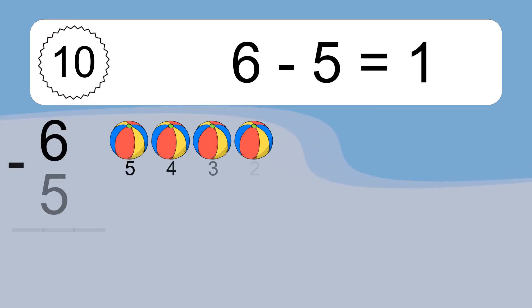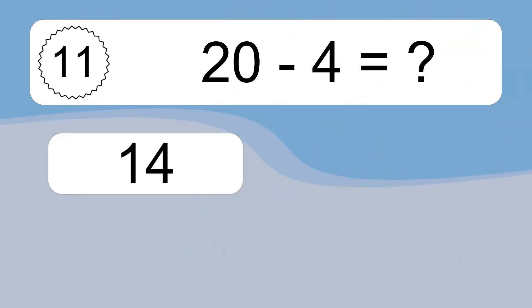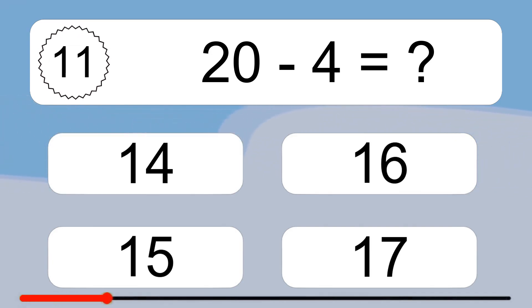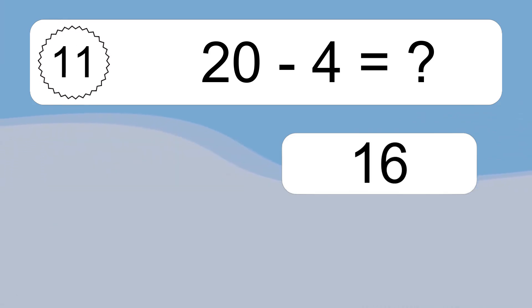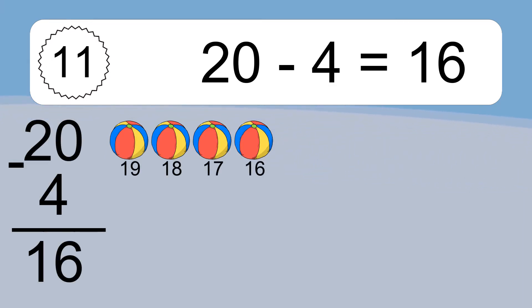6 minus 5 equals 1. Let's count it. 5, 4, 3, 2, 1. 20 minus 4 equals what? 20 minus 4 equals 16. Let's count it. 19, 18, 17, 16.